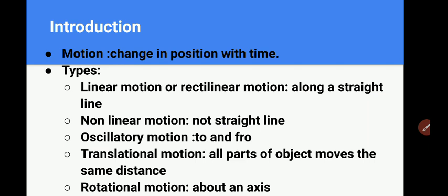Koi bhi object apni position time ke saath change karta hai, toh hum kehte hain ki woh object motion mein hai. For example, a moving car — car move ho rahi hai, toh uski position time ke saath change ho rahi hai, toh hum kehenge ki car motion mein hai.